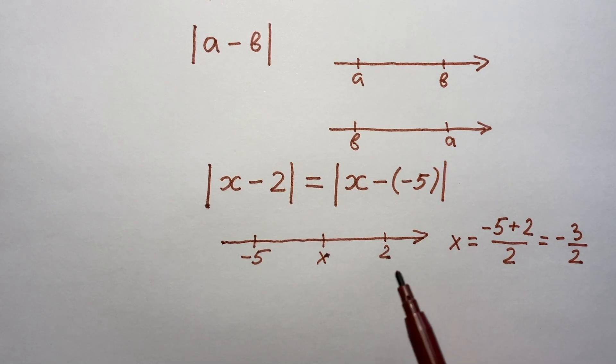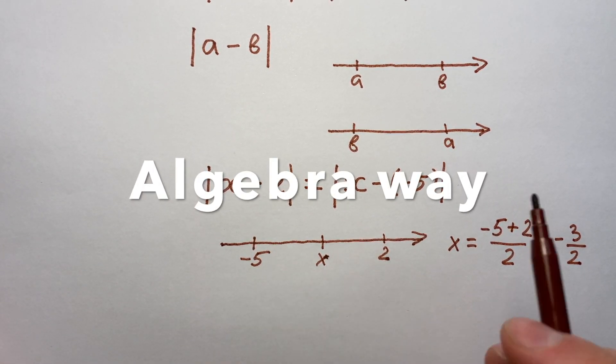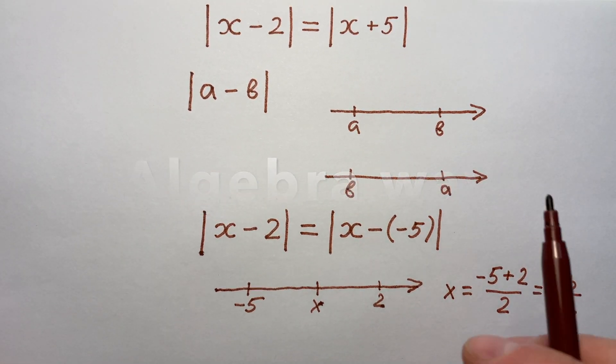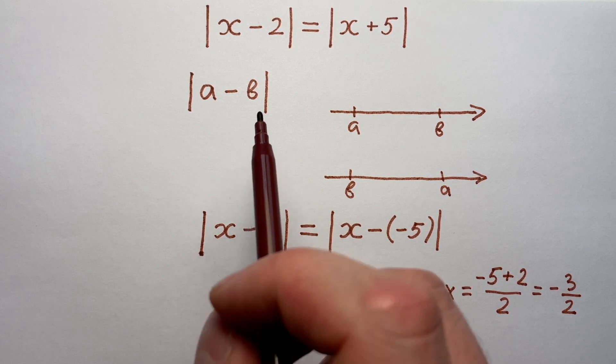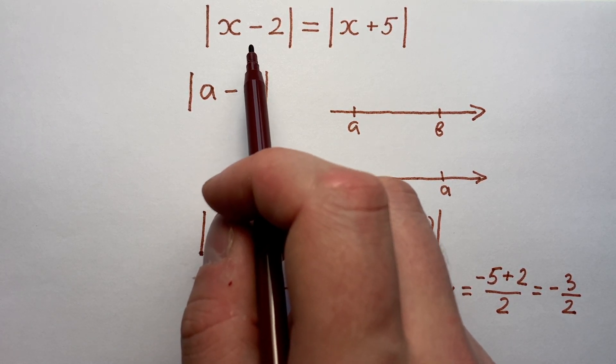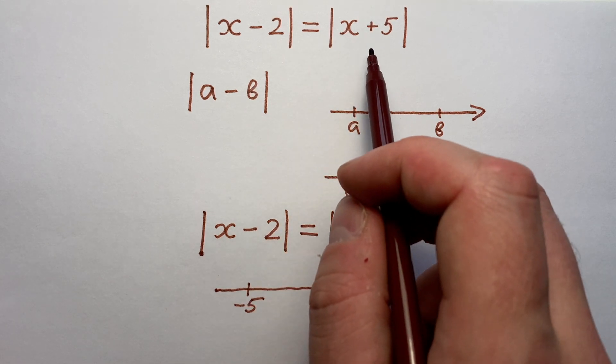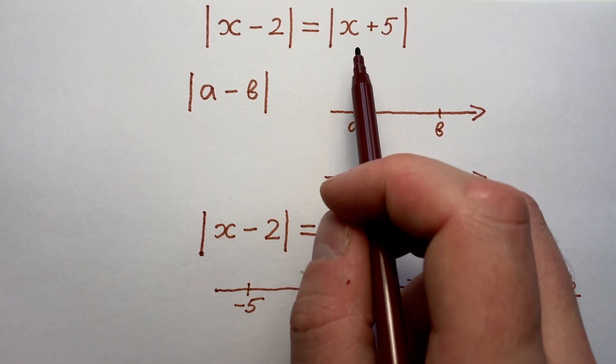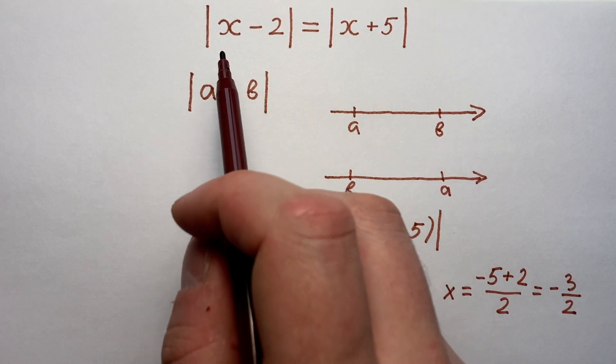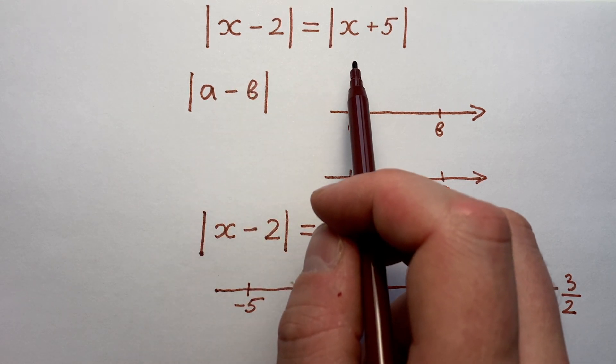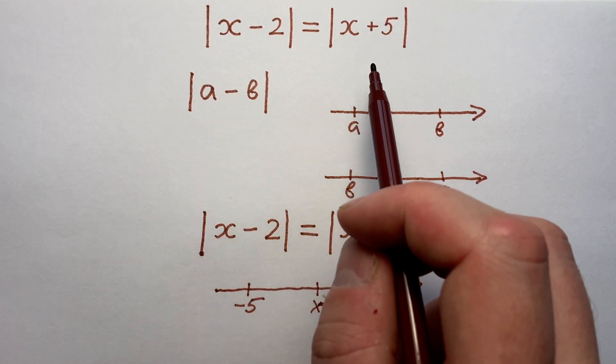But now let's try a classical algebra way to solve this modulus equation. Let's admit that left side is more or equal to zero, and right side is also more or equal to zero. It means that if we square both sides of our equation, we'll get an equivalent equation.